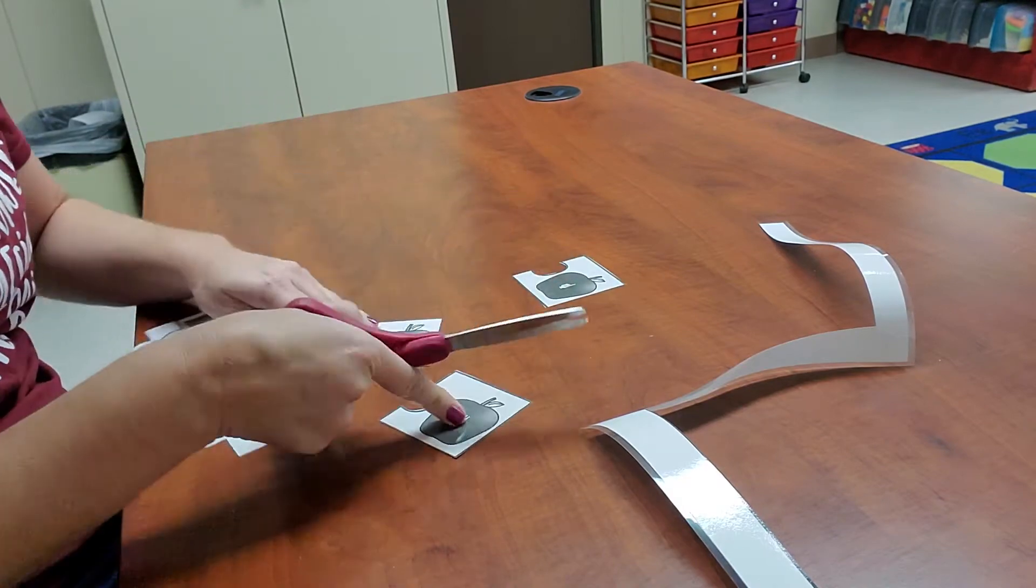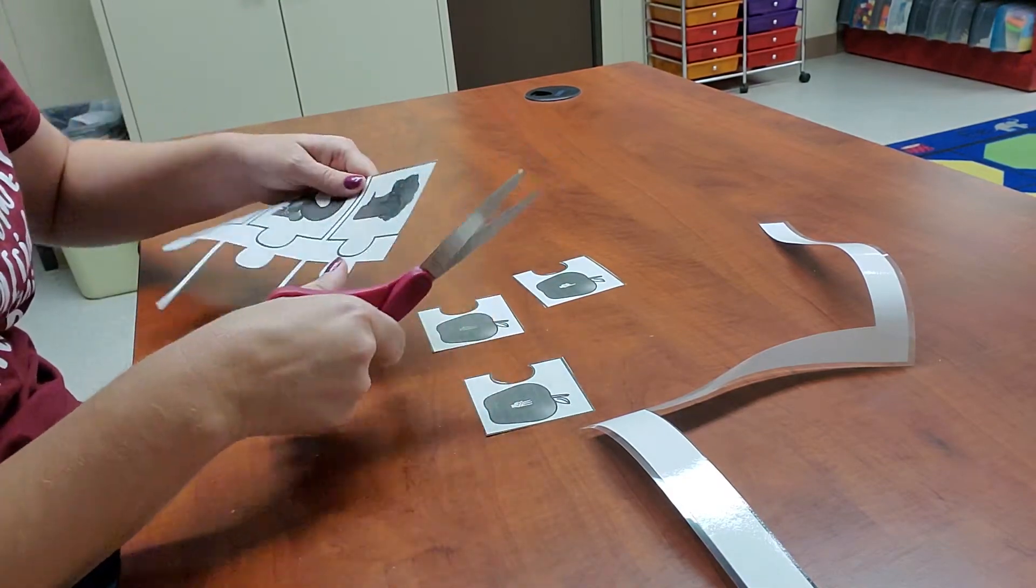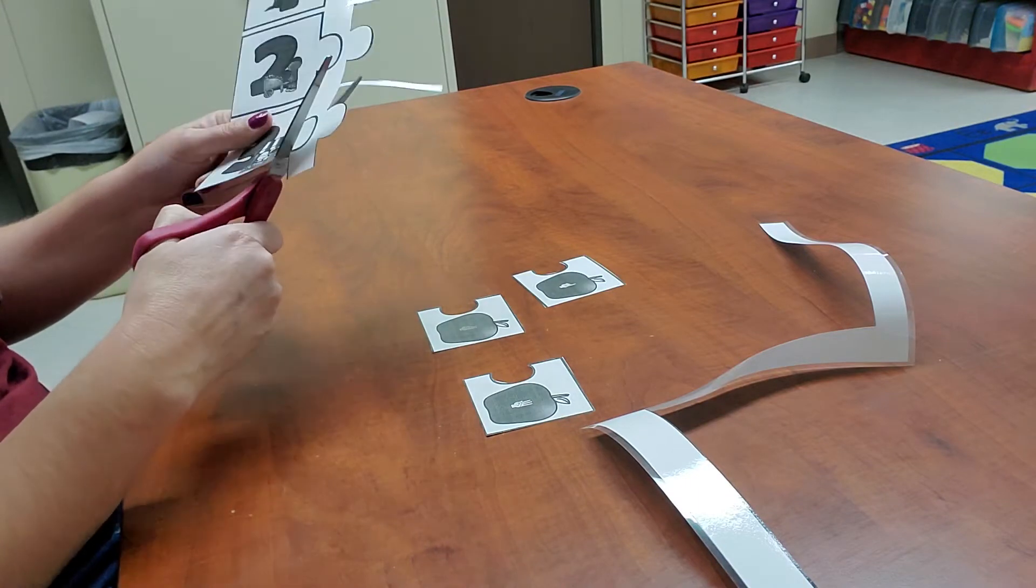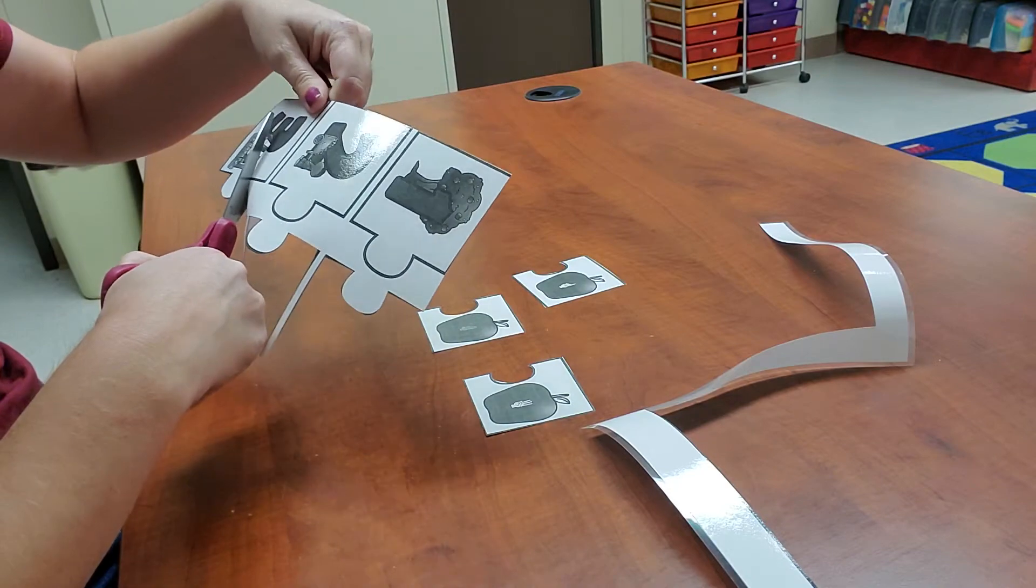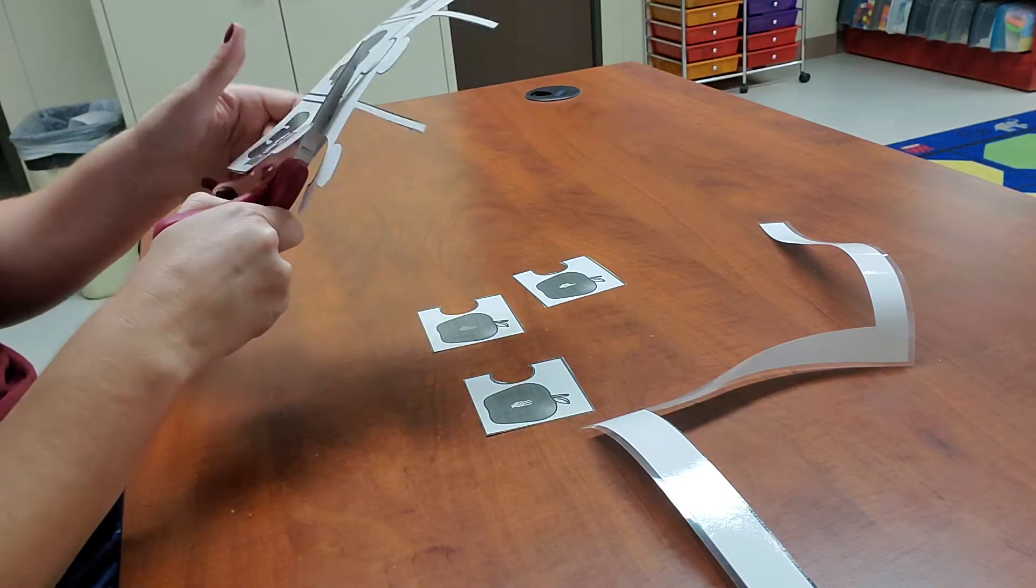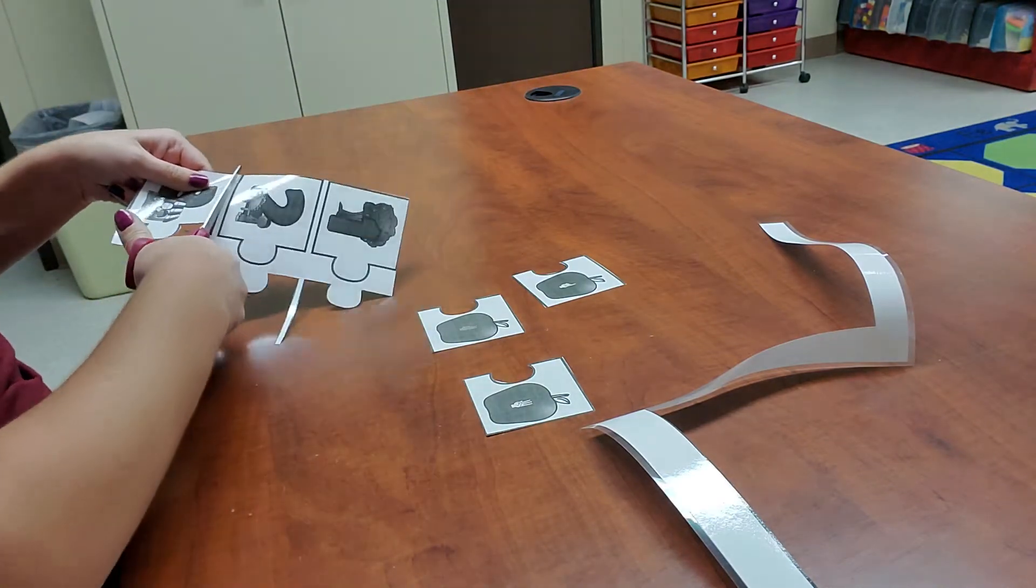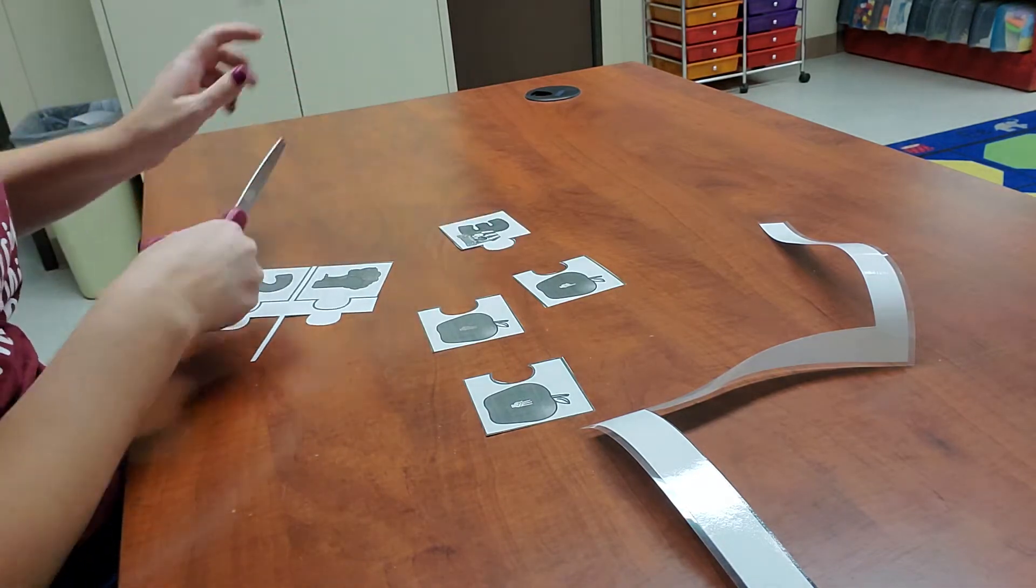So I have these three pieces that are on one side of my puzzle and now I'm going to cut out the other side of the puzzle and it has the piece that sticks out. So there's one.